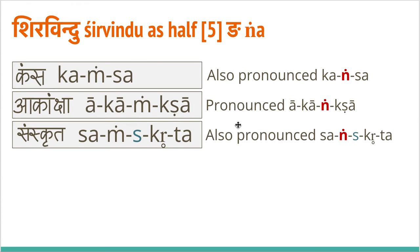'Akangsa' — part of the reason this is nasal is because of the 'ko' sound. 'Sanskrit', 'sanskrit', 'sanskriti' — this is how it's usually pronounced, with a little bit of nasal sound: 'sanskrit'. Almost like it had a chandrabindu.